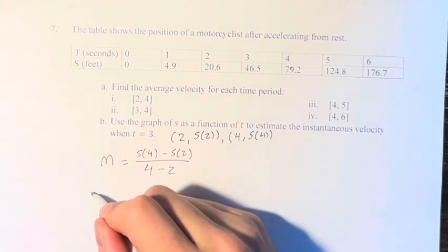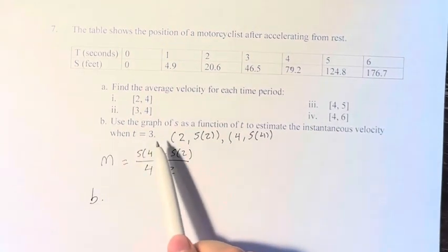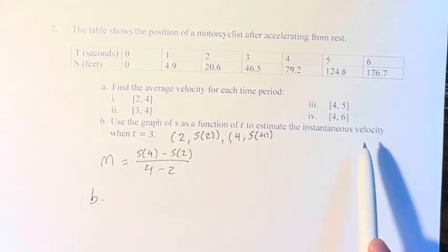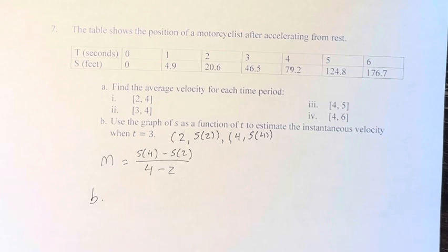And that is part A. In part B, we're asked to use the graph of s as a function of t to estimate the instantaneous velocity when t equals 3.